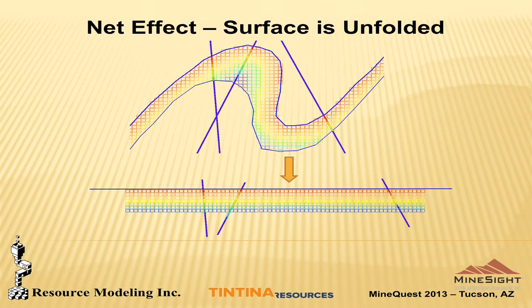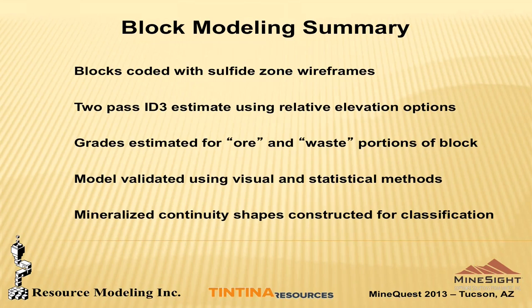For deposits that have a strong relationship between grade and a surface, this method really does a nice job of minimizing the smoothing inherent in other methods. The net effect, in a crude sort of way, is that the complex folded surface is unfolded and flattened for the purpose of grade interpolation. This is not as sophisticated as what's coming — Mentech is putting together an unfolding routine — but for a poor boy like myself, this seems to do a pretty good job. In summary, we code blocks with the sulfide wireframes. In the case of Black Butte, I use a two-pass ID³ estimator.